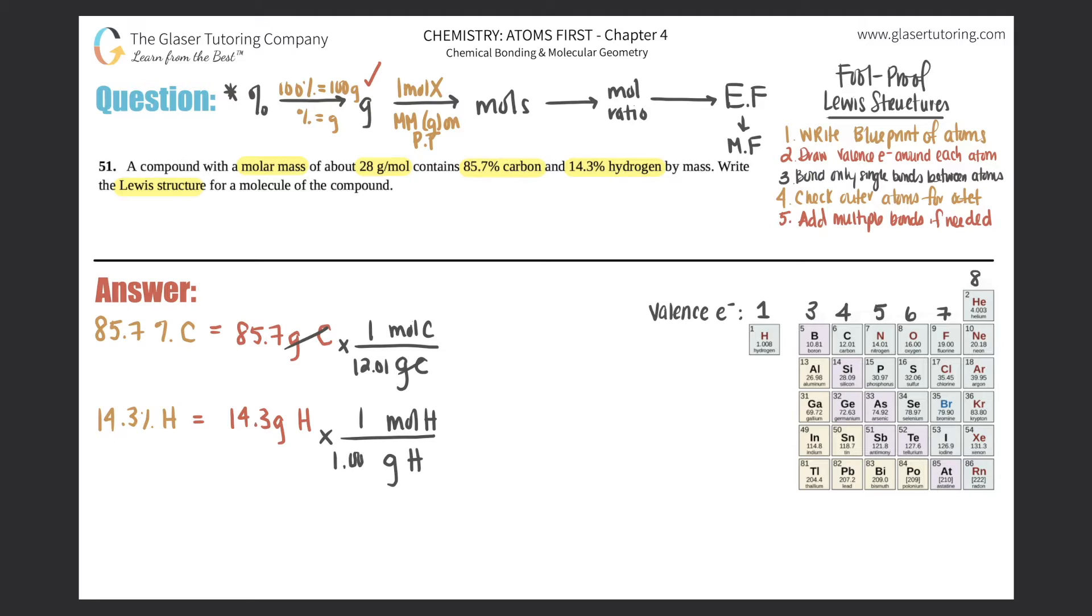And now let's find out the moles for both of them. So if we get out the calculator and we say 85.7 divided by 12.01, it would roughly be, if we do three sig figs, 7.14 if we rounded. So that's 7.14 moles of carbon. And then if we do this, 14.3 divided by 1.008, it's basically going to be the same number - it would be 14.2.